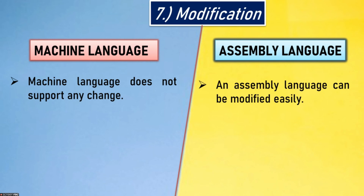Seventh point — modification. Machine language does not support any changes. Assembly language, however, can be modified easily.